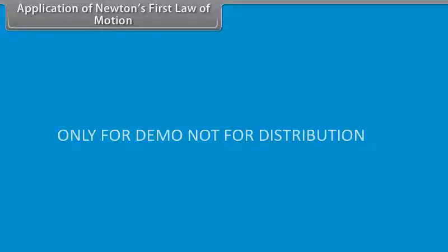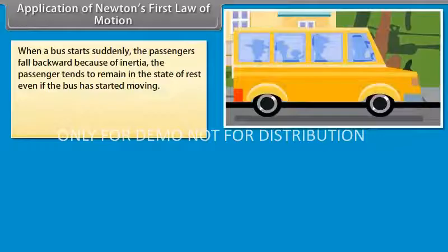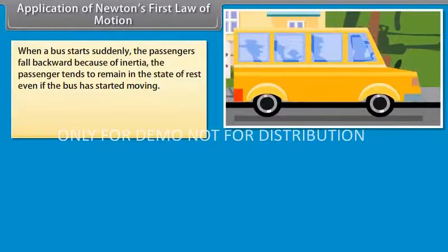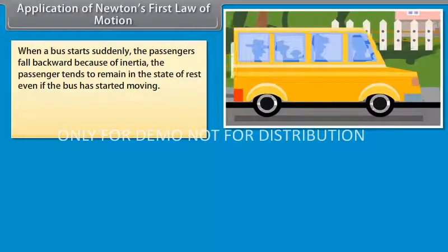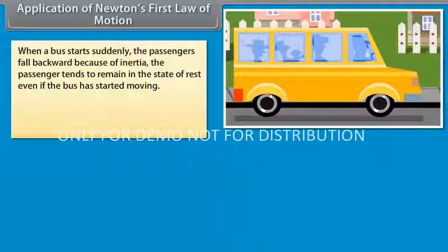Application of Newton's first law of motion: When a bus starts suddenly, the passengers fall backward because of inertia. The passenger tends to remain in the state of rest even if the bus has started moving.